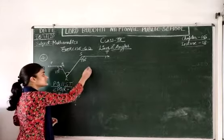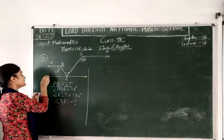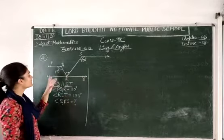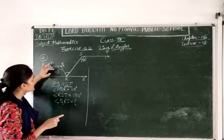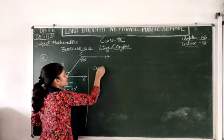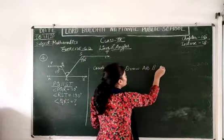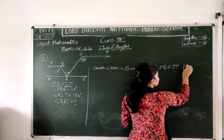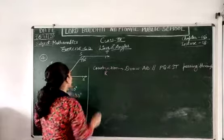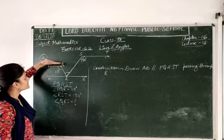Whenever a question like this comes, you will just draw a parallel line through the given point. Draw a line which is parallel to the given two lines. Let's name it AB, passing through R. Construction: draw a line AB parallel to PQ and ST, passing through point R.